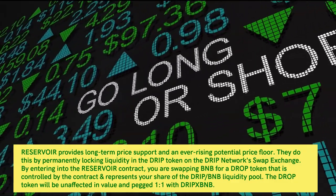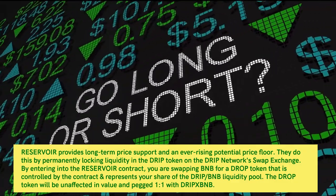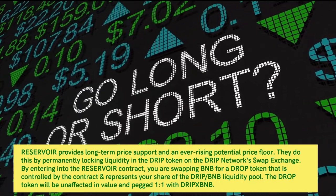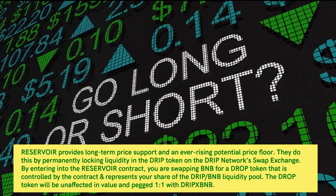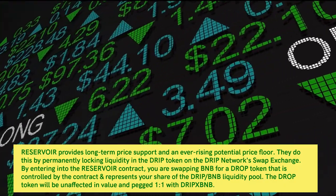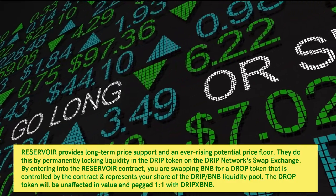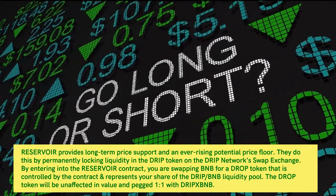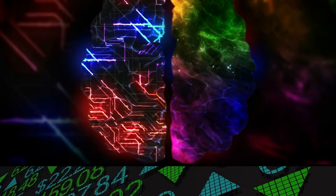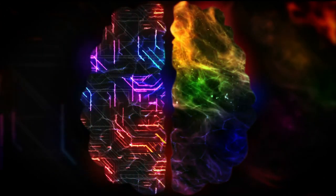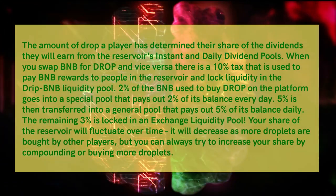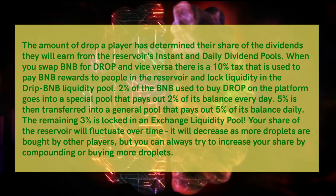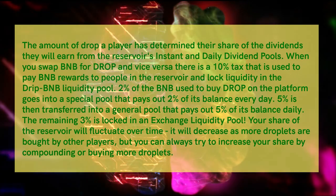By entering the Reservoir contract, you are swapping BNB for a DROP token that is controlled by the contract and represents your share of the DRIP/BNB liquidity pool. The DROP token will be unaffected in value and pegged one-to-one with DRIP/BNB. The amount of DROP a player holds determines their share of the dividends earned from the Reservoir's instant and daily dividend pools.